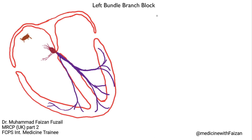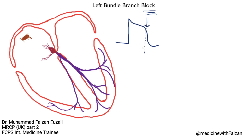It is important to understand the concept that the word block doesn't necessarily mean a complete block. Sometimes there's a refractory period, and if the AV node lets a signal down at a point where the cell has not yet recovered, that part of the conduction system will fail to conduct the signal.